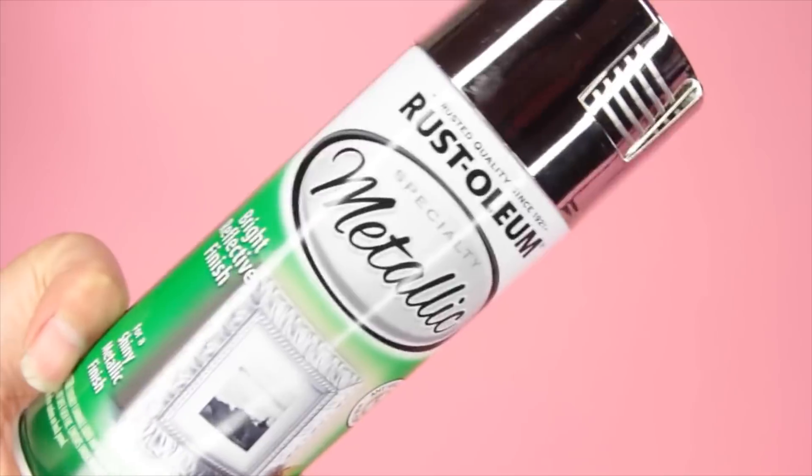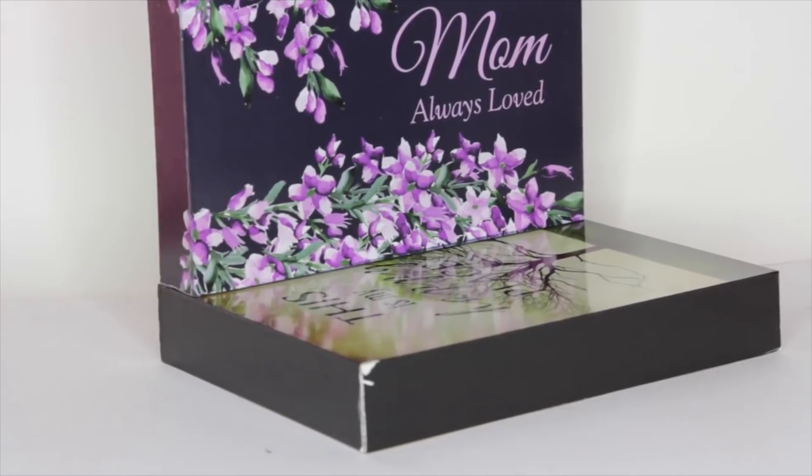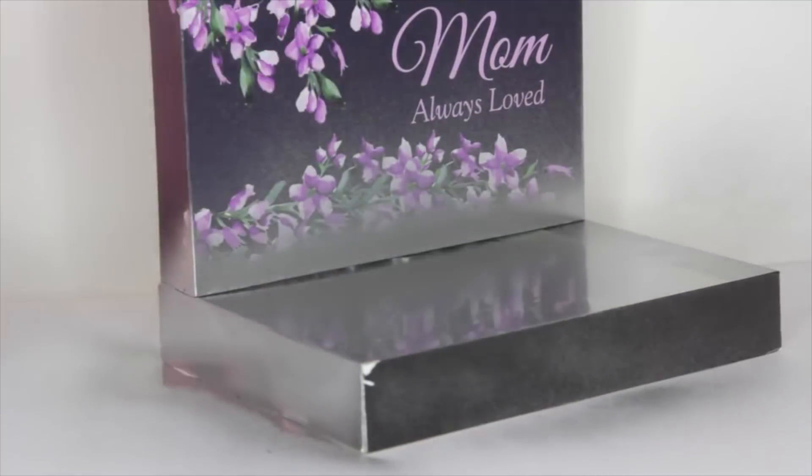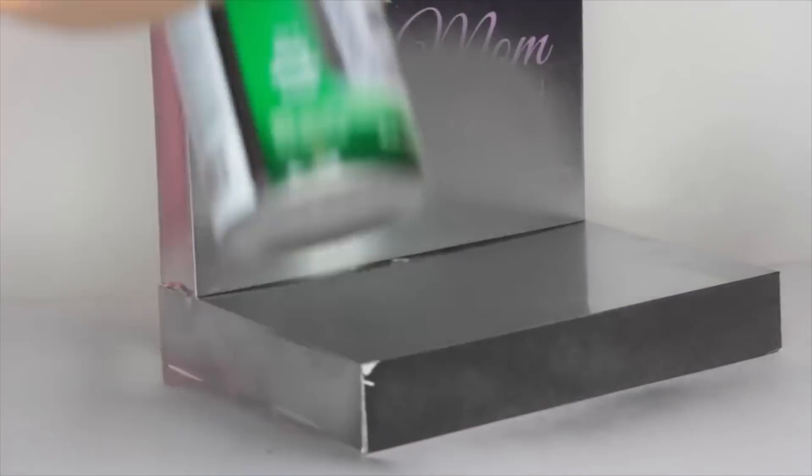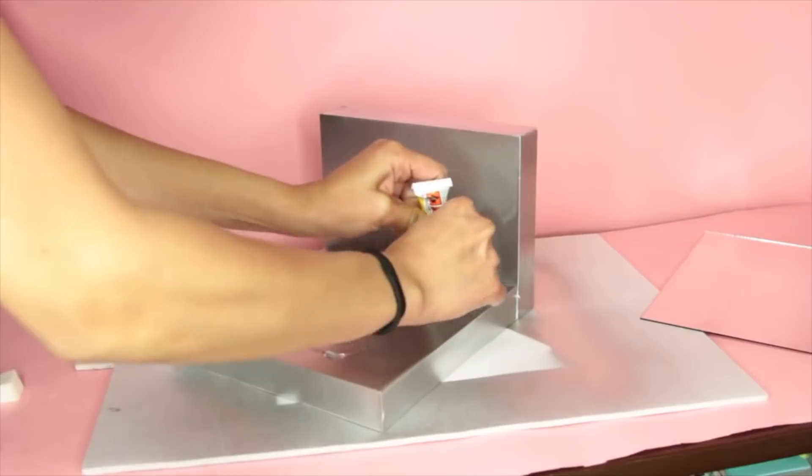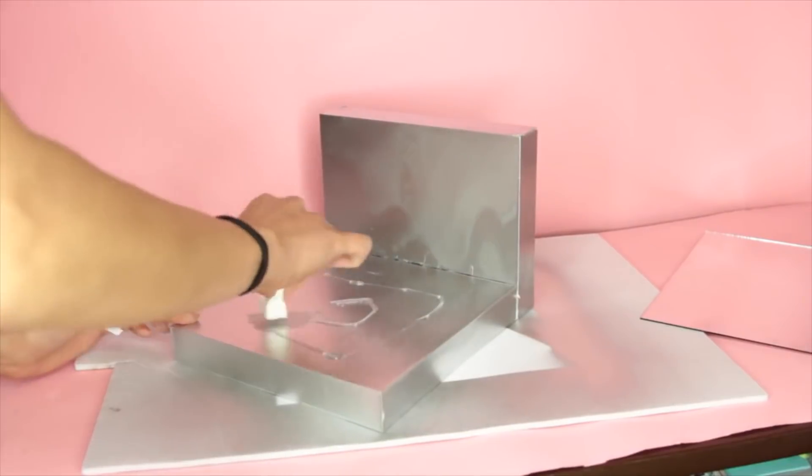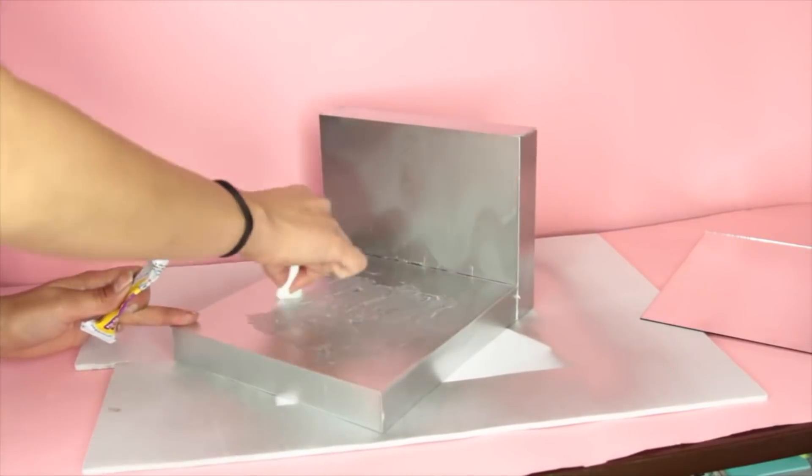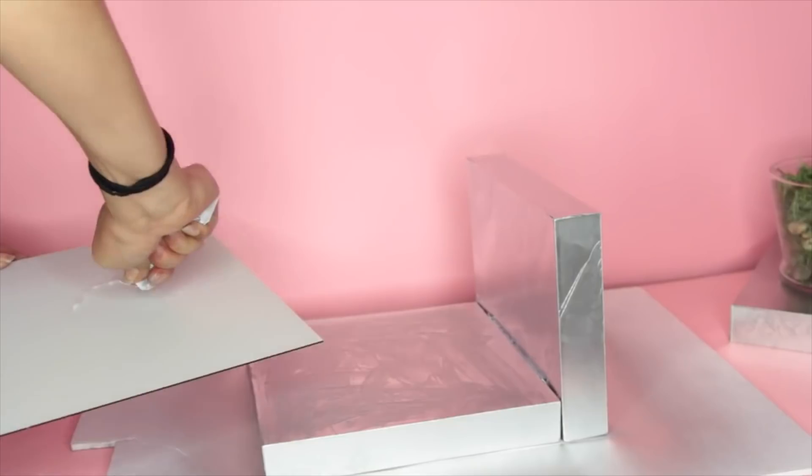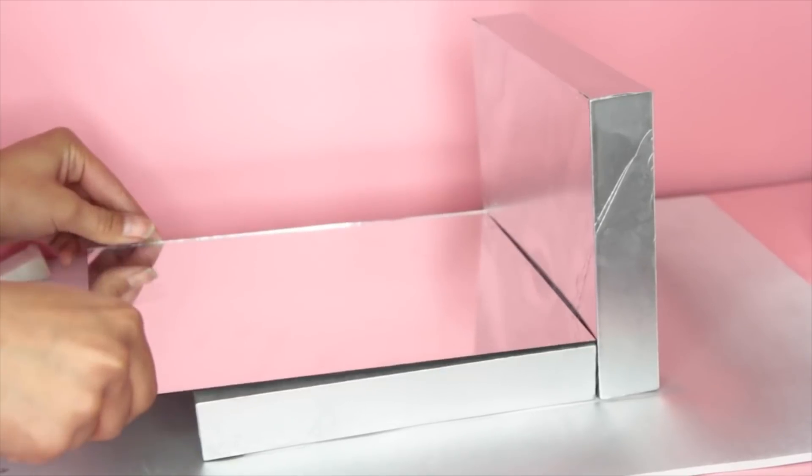I then spray paint the boxes silver. I don't want to keep it with whatever's on the boxes because it just doesn't look right. Dollar Tree carries all sorts of frame mirrors. You'll need at least six for this, nine if you want to make the back mirror taller. What you're going to do is take the mirror out of the frame, then glue one of the mirrors to the back of the wider box.